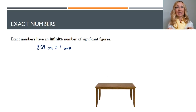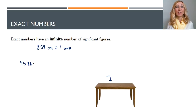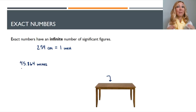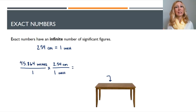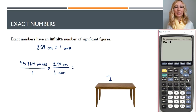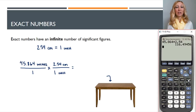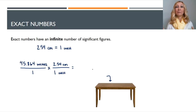Also, some conversion factors are exact numbers. For example, 2.54 centimeters per one inch — I know that there are exactly 2.54 centimeters in every one inch. Now some conversion factors aren't exact; some are approximations. But this one happens to be exact. So if I want to determine how long a table is in centimeters and I measure it in inches, say I get 45.864 inches and want to convert that to centimeters, I use my 45.864 inches and the exact conversion factor of 2.54 centimeters per inch.